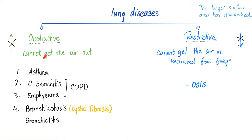Obstructive lung disease: I cannot get the air out. Restrictive lung disease: I cannot get the air in. Examples of obstructive include asthma, COPD (which includes chronic bronchitis and emphysema), bronchiectasis (which could be caused by cystic fibrosis), and bronchiolitis.